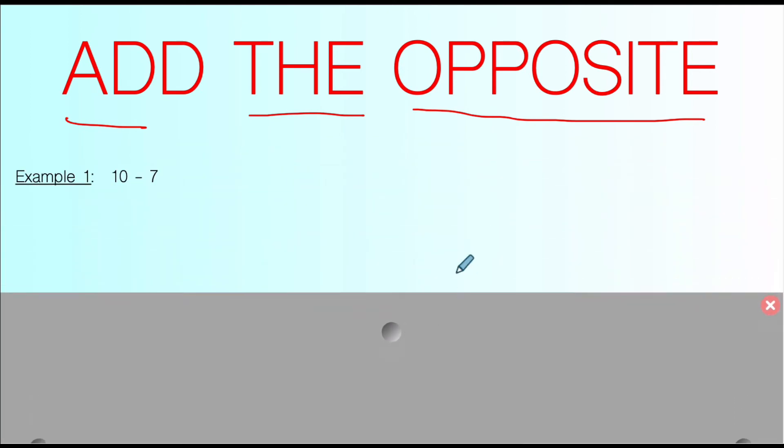So the first example we'll hit is 10 - 7. Now you're probably sitting there saying, I know what 10 - 7 is. It's 3. I just want to prove to you that add the opposite works for every single subtraction problem. So let's do exactly what this says. We're going to change our subtraction to add.